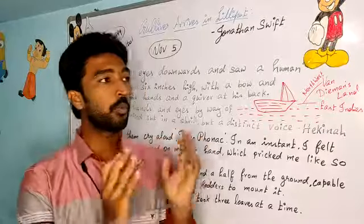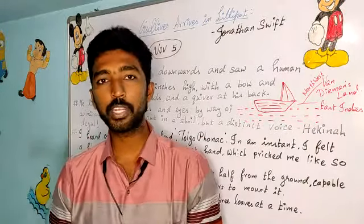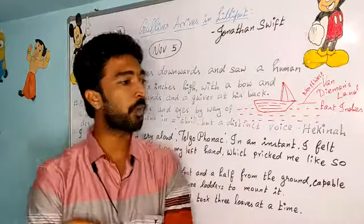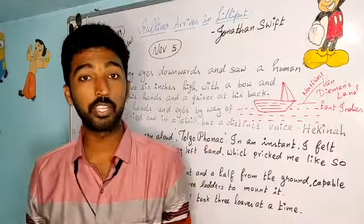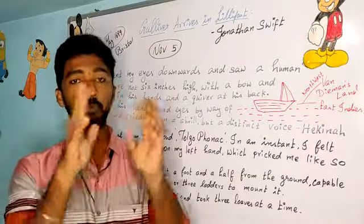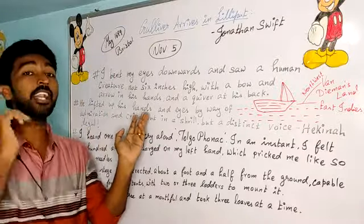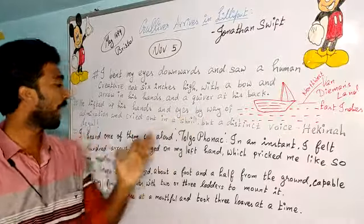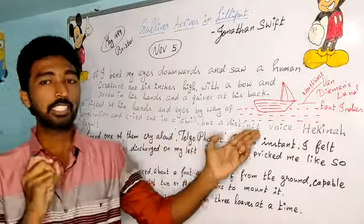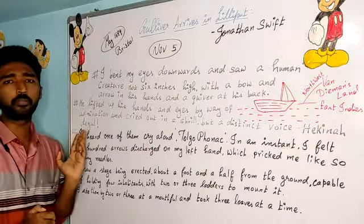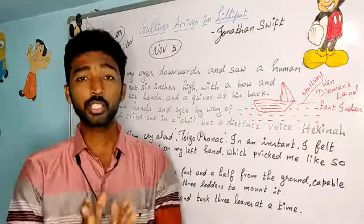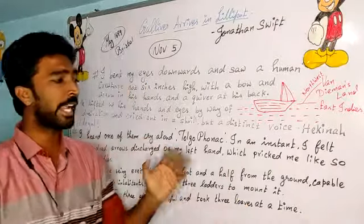To the little people, Gulliver looked like a big monster. He was afraid, so he just roared — made a loud sound — and it frightened those people. Some of them ran away, some fell off his body and got hurt. One of them came near to his face, lifted up his hands and eyes by way of admiration, and cried out in a shrill, distinct voice: 'Hekina Dekul!' Gulliver didn't know what it meant, and soon everyone was shouting 'Hekina Dekul' at the same time.